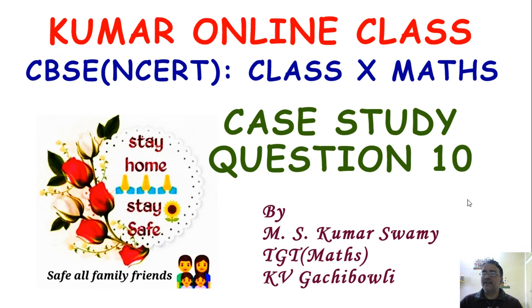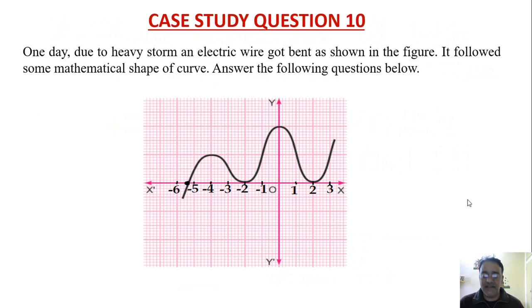Now we are going to start case study question number 10, which is based on polynomials. One day due to a heavy storm, an electric wire got bent as shown in the figure. It followed some mathematical shape of curve. Answer the following questions.